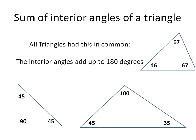Let's go ahead and look at the sum of interior angles of a triangle. Triangles have, inside them, three interior angles — there's an example here. Each triangle's interior angles will add up to be 180 degrees.